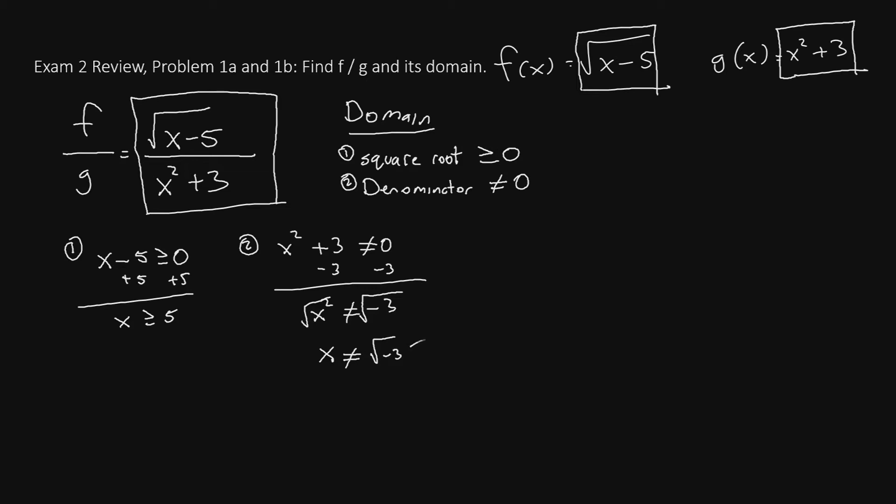And if you're ever solving x not equal to a non-real number, this means that you have no restrictions. However, we still have this restriction from part 1, we just don't get any restrictions from part 2. So the only restriction on our domain is that x must be greater than or equal to 5.